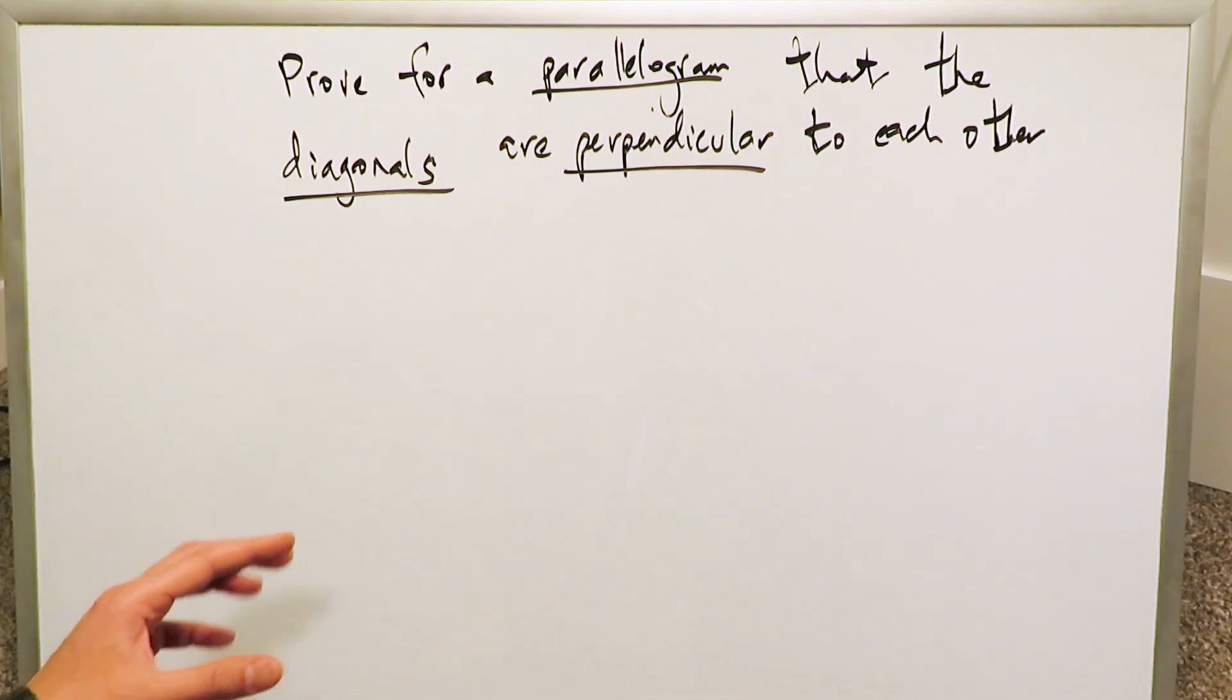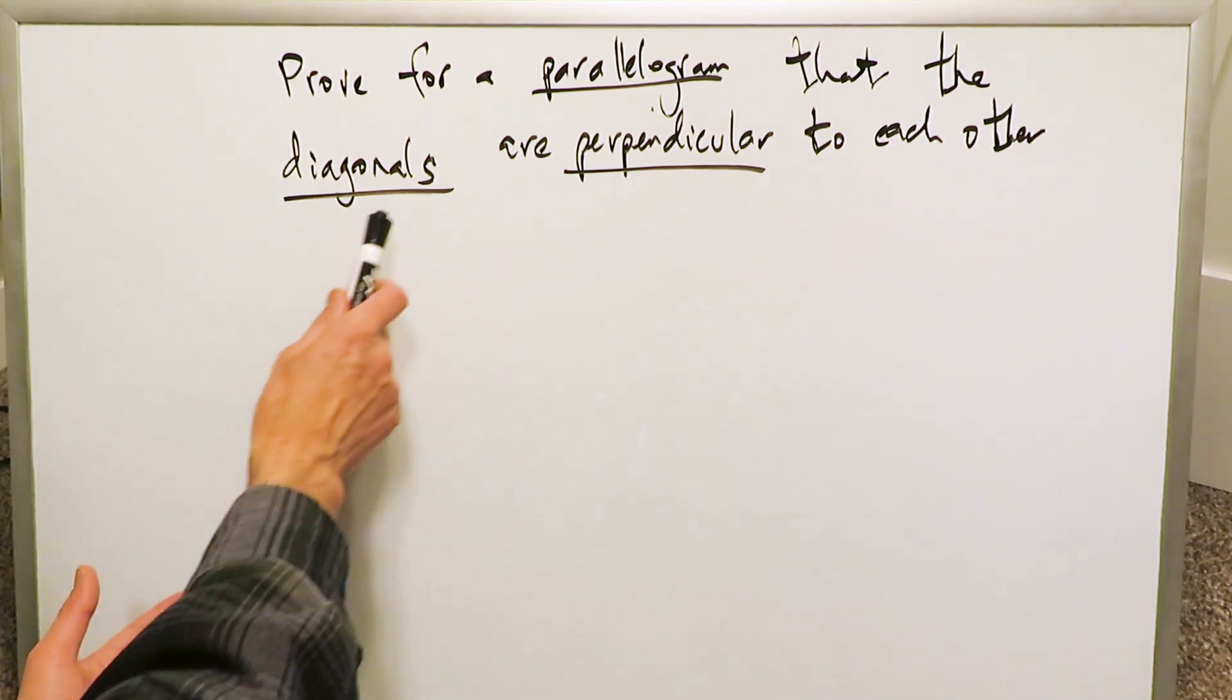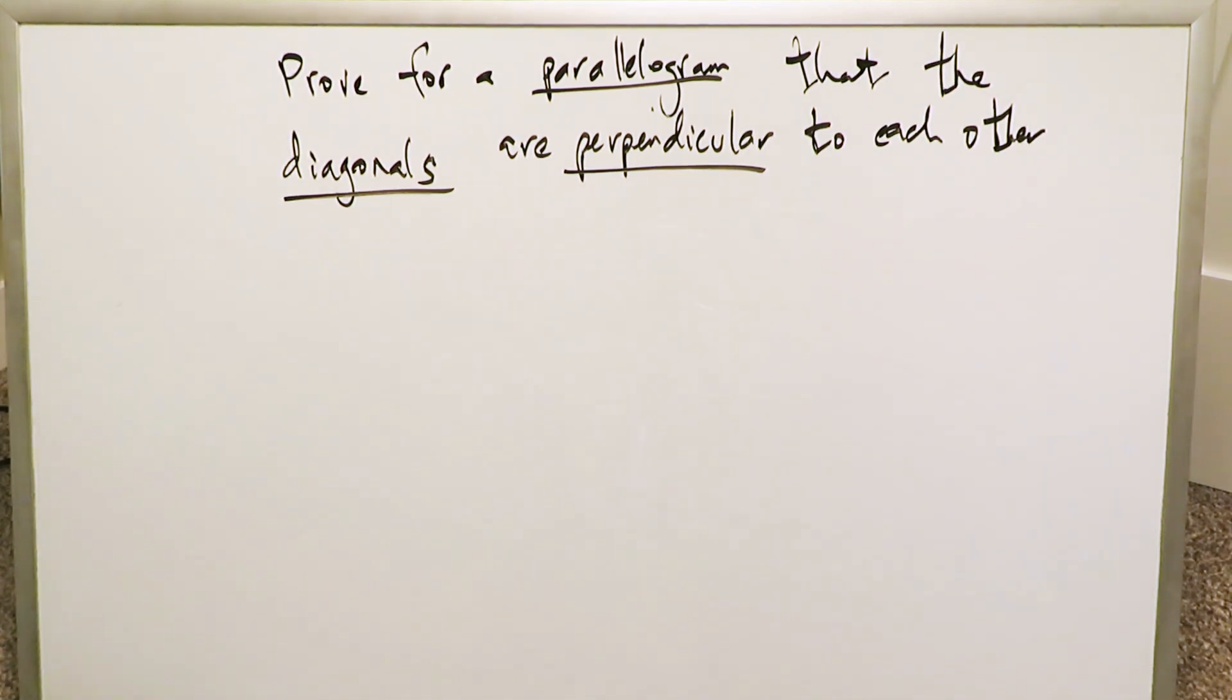We have to prove in this video for a parallelogram that the diagonals are perpendicular to each other. Or you can say that the diagonals meet each other at 90 degrees.